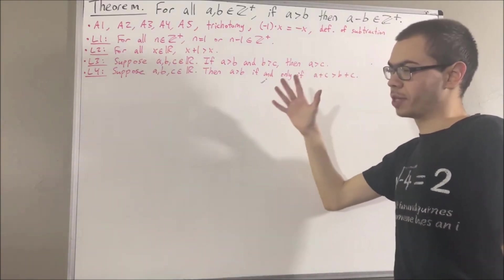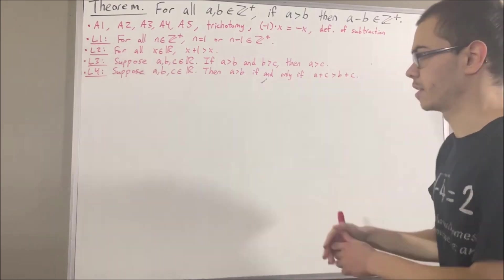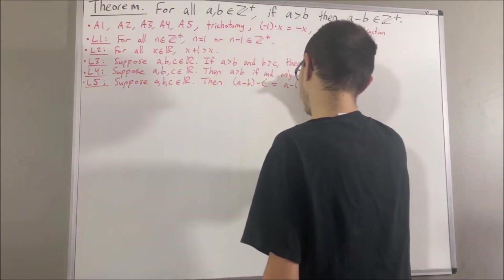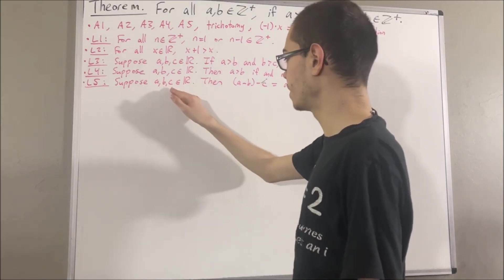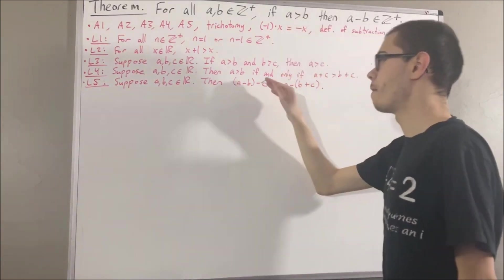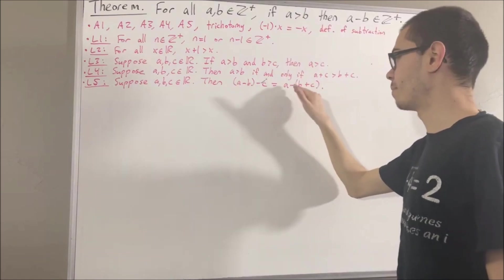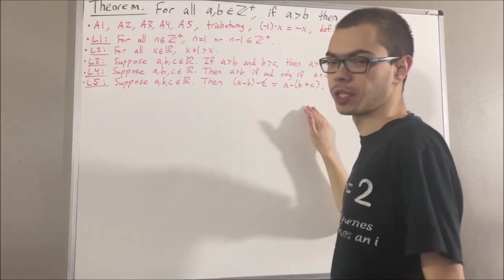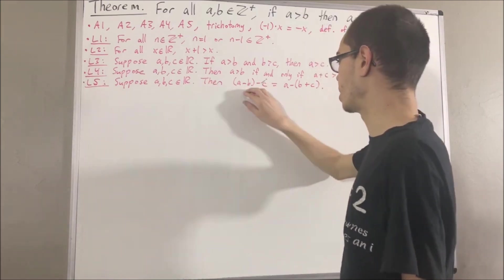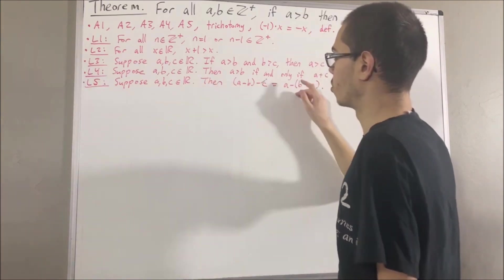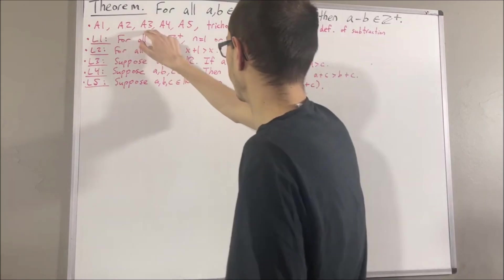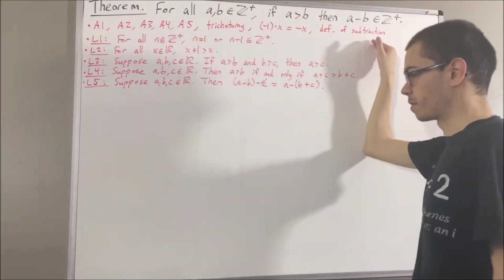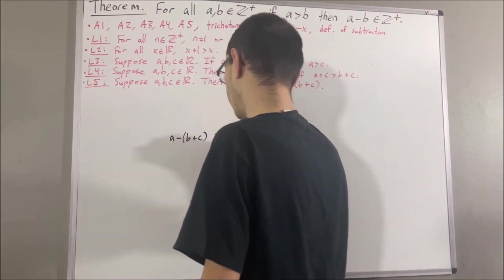There's one other preliminary result we're going to be using, and that is the following. Given real numbers a, b, and c, we have a minus b minus c is equal to a minus (b plus c). Now, we actually haven't proven this result yet, so we're just going to quickly show that these two are equal. And to do so, we're going to be applying axioms 2, 3, this result, and the definition of subtraction.